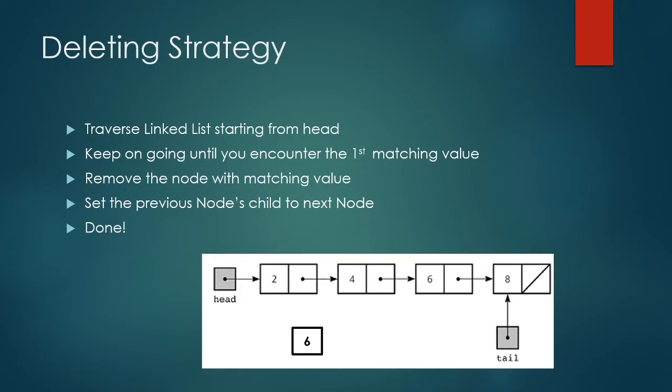So this is 6, the node that you want to delete. You start from 2, that's not equal to 6. Then you go to 4, again not equal to 6. Then you go to 6, which is equal to 6. So all you have to do is just delete it and assign the pointer from 4 to the node with value 8.